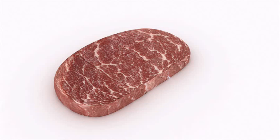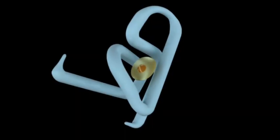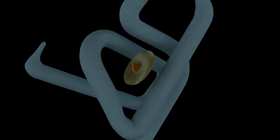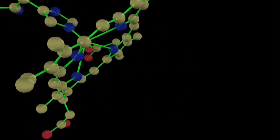Deoxymyoglobin is responsible for the purplish-red appearance of uncut, vacuum-packaged, and/or meat interior to the surface of steaks and roasts, where little oxygen is present. This form exists in a ferrous state with no attached ligands.